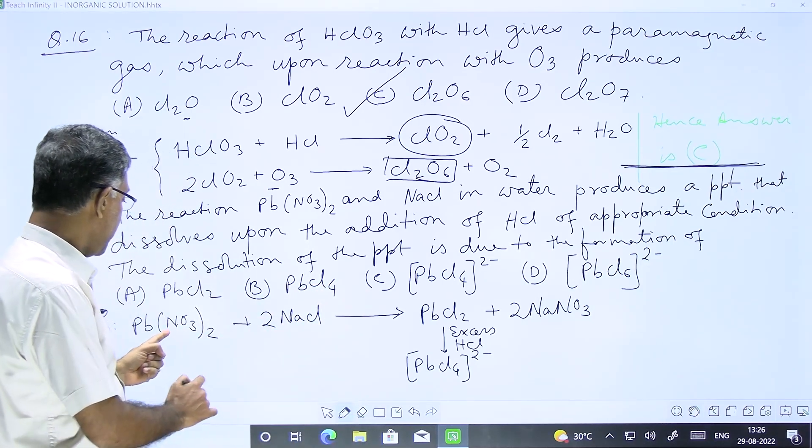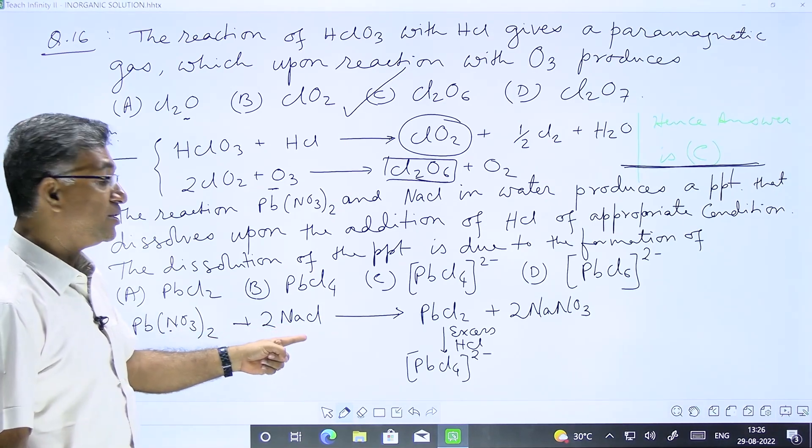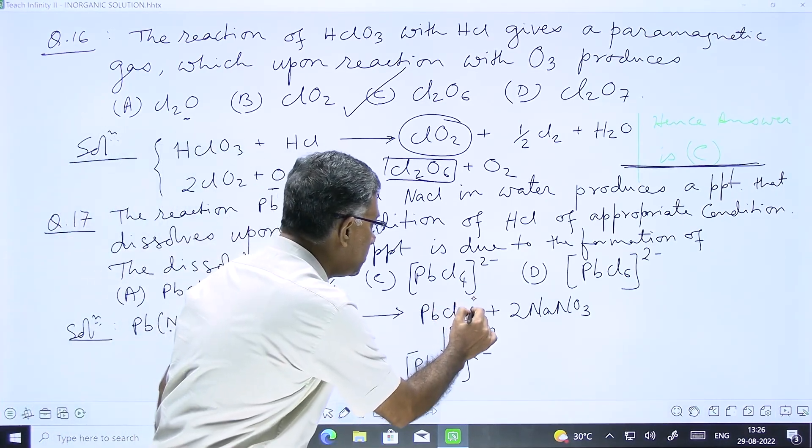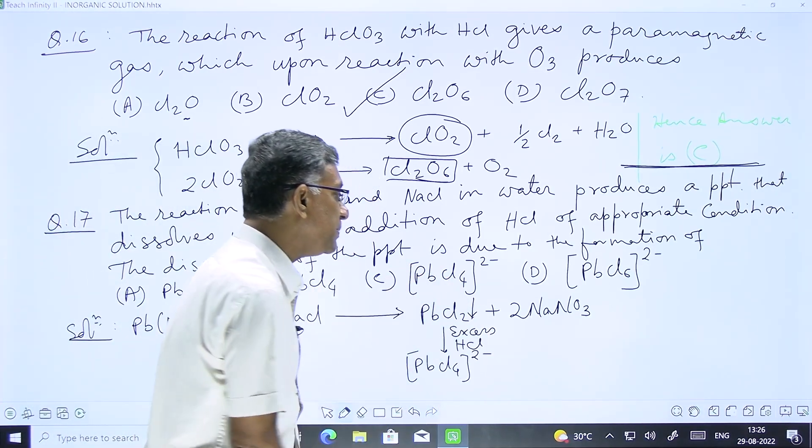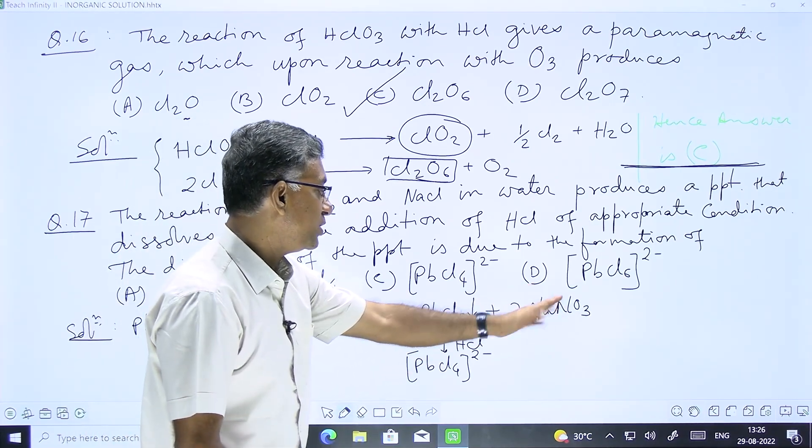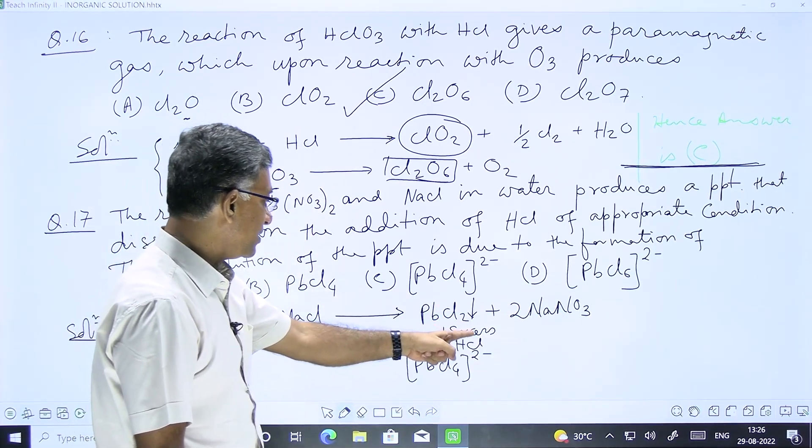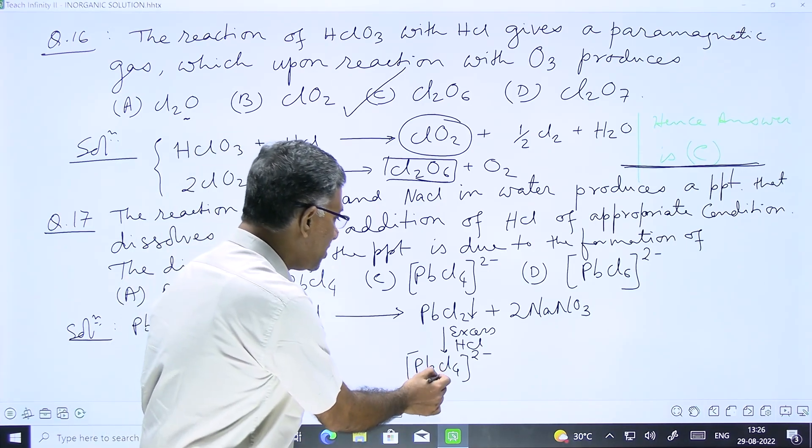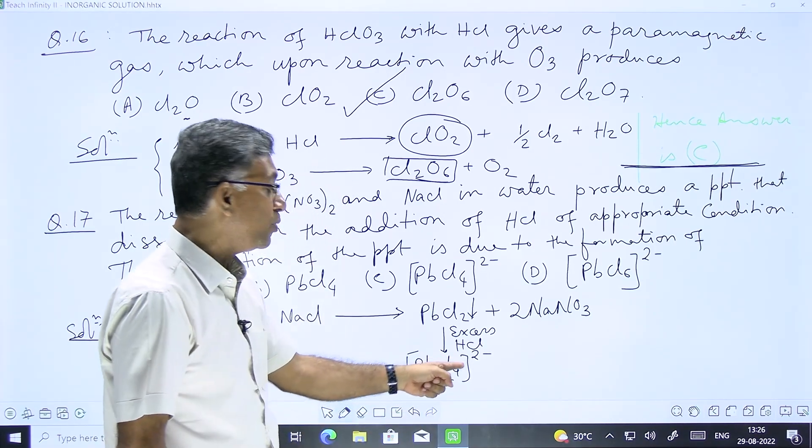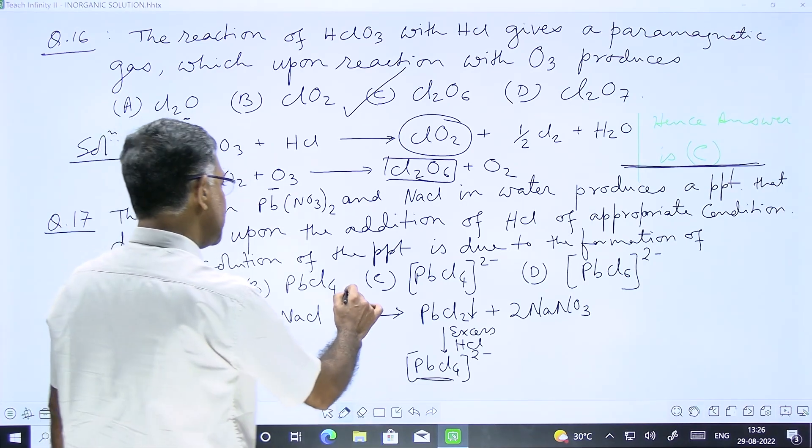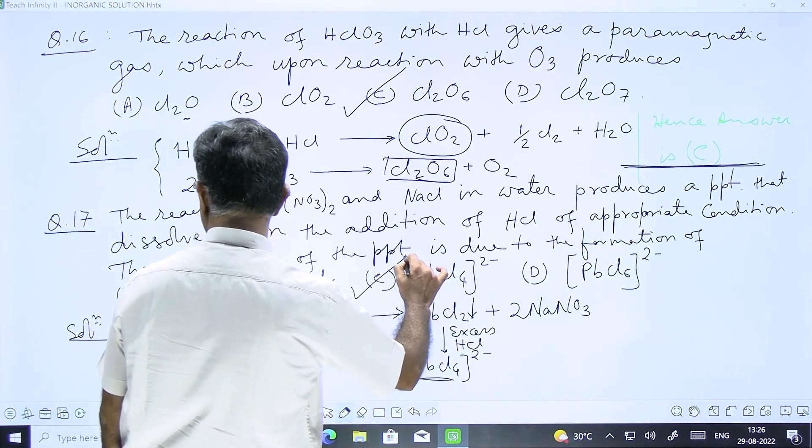Let us see the reaction. Pb(NO3)2 plus NaCl gives PbCl2 precipitate - that is the white precipitate - and NaNO3 is forming. And PbCl2 with excess HCl reacts to form soluble species PbCl4^2-, and accordingly option C is the correct answer.